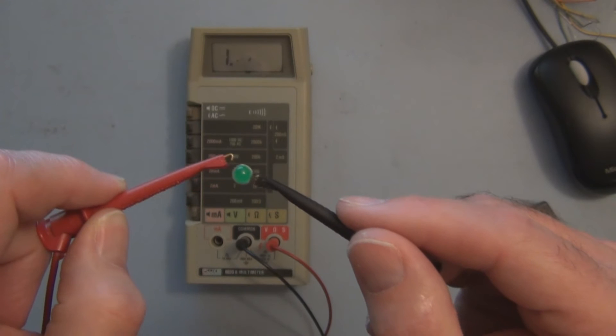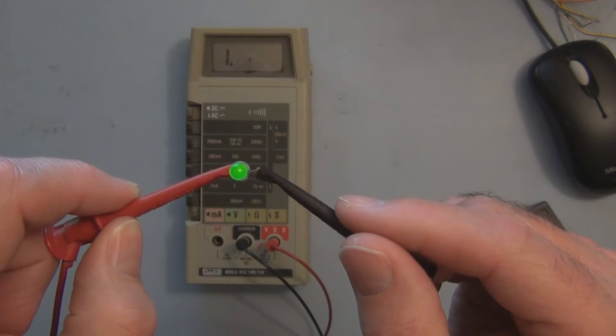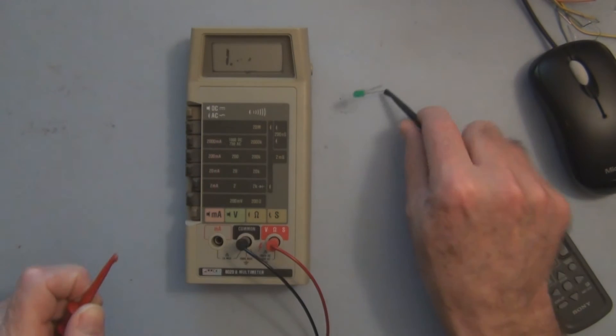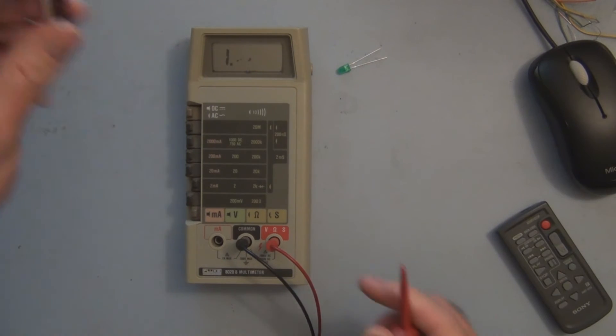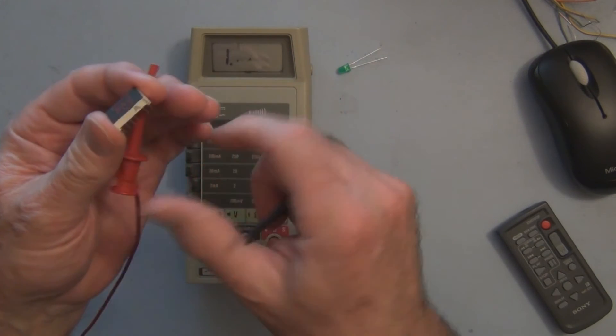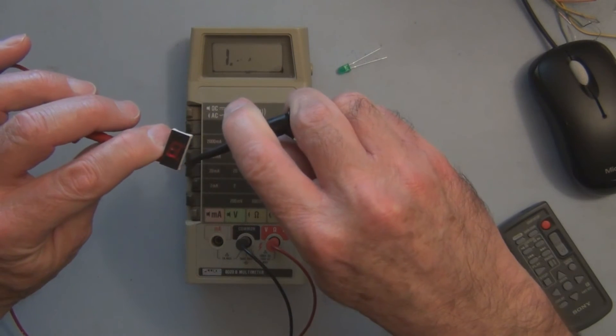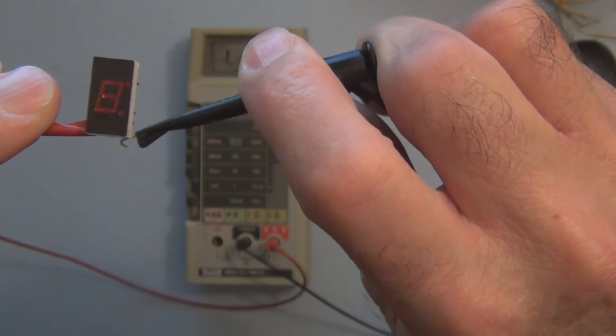The meter doesn't supply enough current to have to worry about blowing up or burning out this LED. So what you could do is take one of these and just randomly try to find a correct...